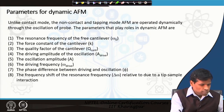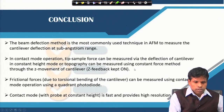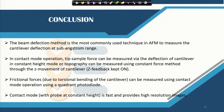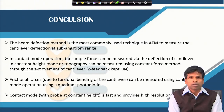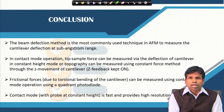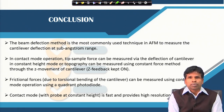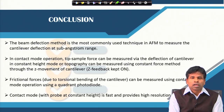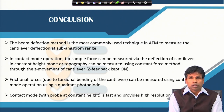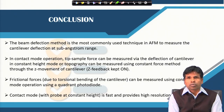In conclusion, the beam deflection detection method is the most common in AFM for measuring cantilever deflection. In the contact mode of operation, the tip-sample force can be measured via the deflection of the cantilever — either by constant height mode or constant force mode. Contact mode AFM allows study of frictional and lateral forces, is fast, and provides very high resolution images.